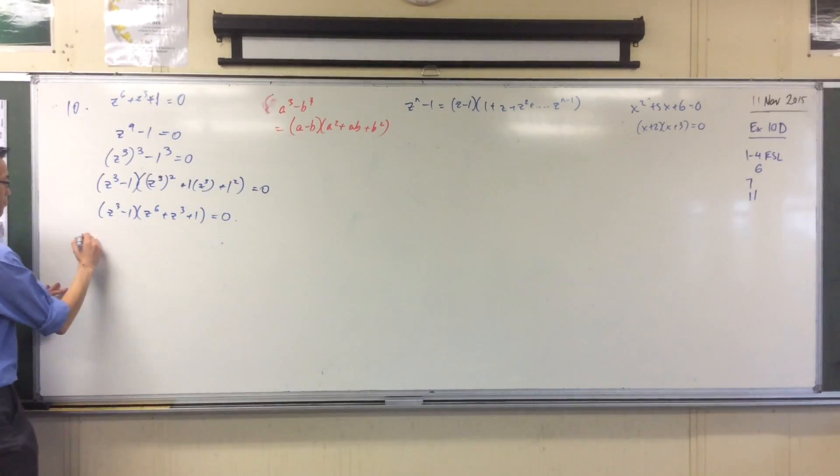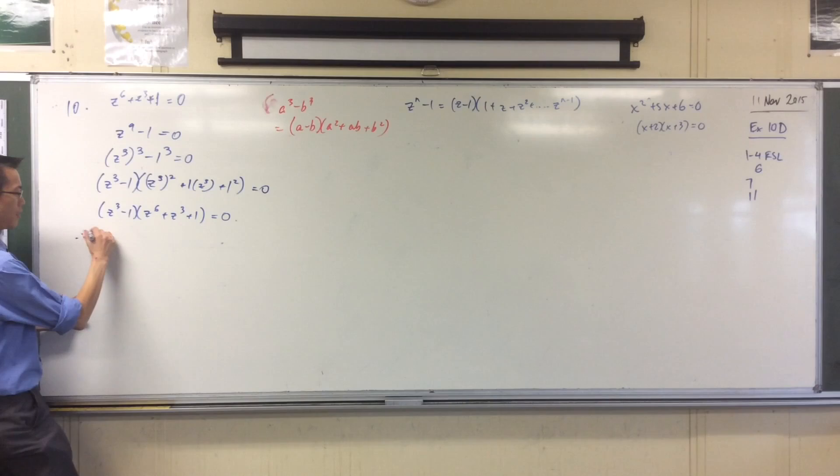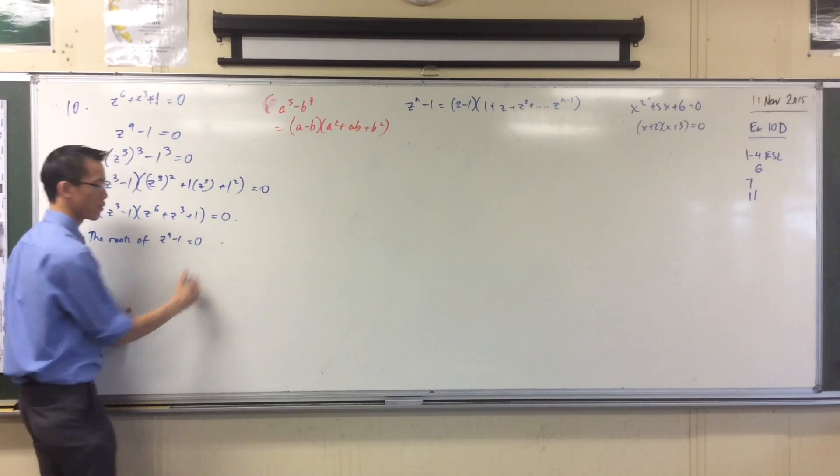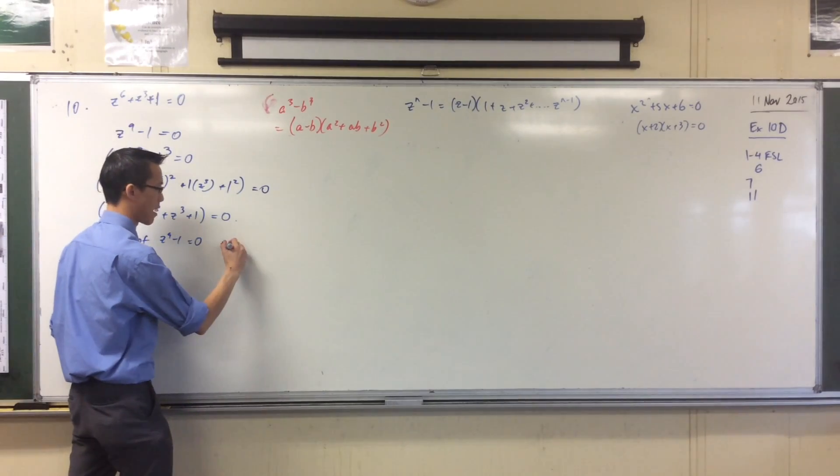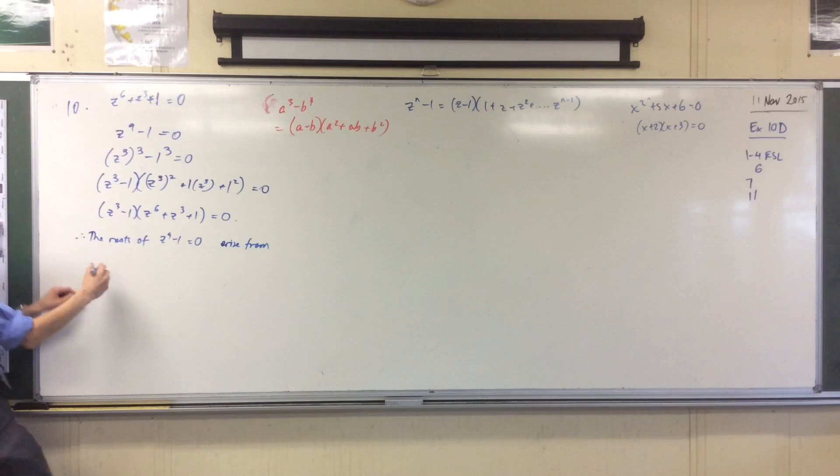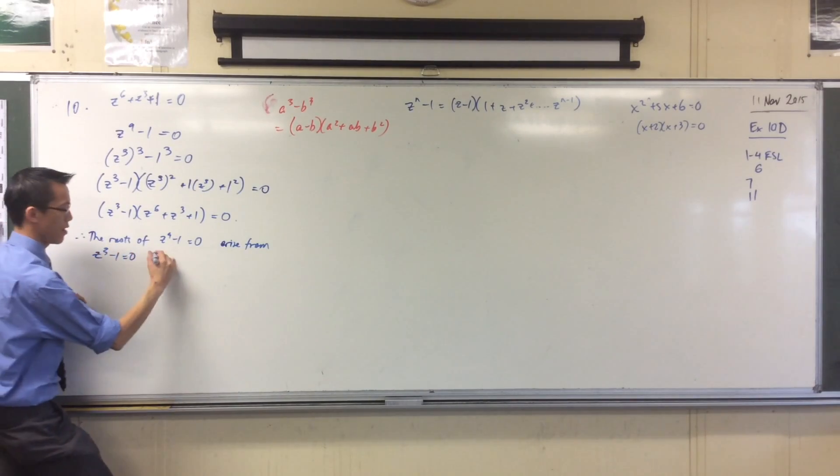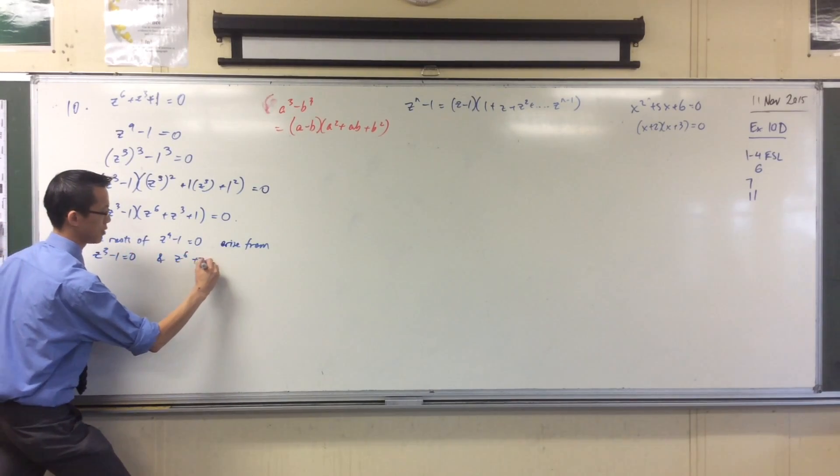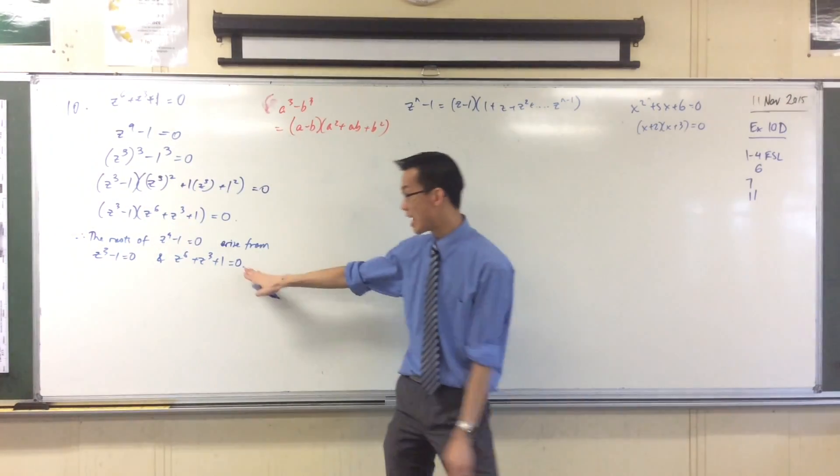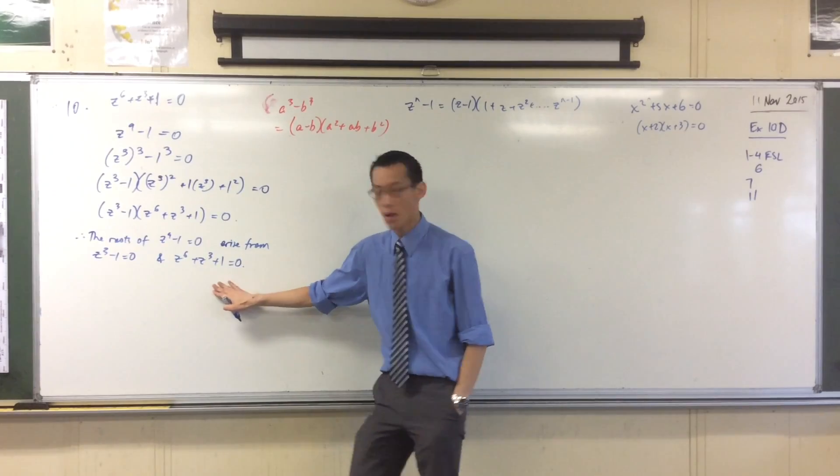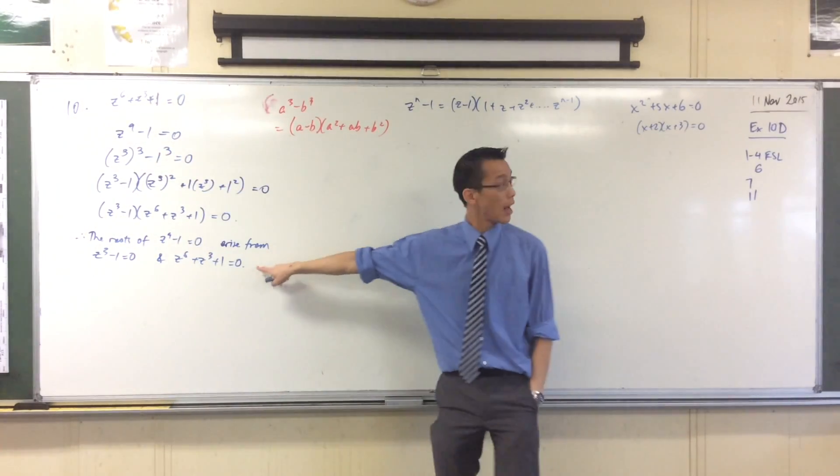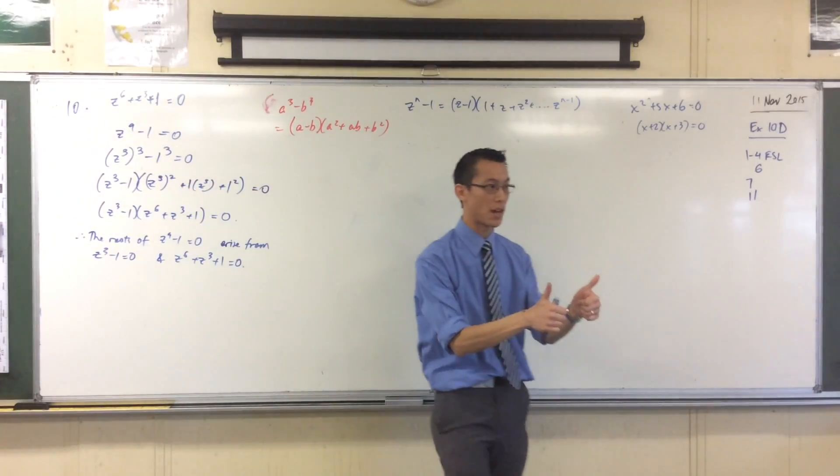So, I can say, therefore, the roots of z^9 - 1 = 0 come from or arise from these two factors: z^3 - 1 = 0 and z^6 + z^3 + 1 = 0. That's all you need to say. You're finished. I've established that this and its solutions will be solutions to this, which is all they were asking for. Show that the roots of this guy are roots of this guy. Happy times. How about we go to the next part? It's an easy part visually.